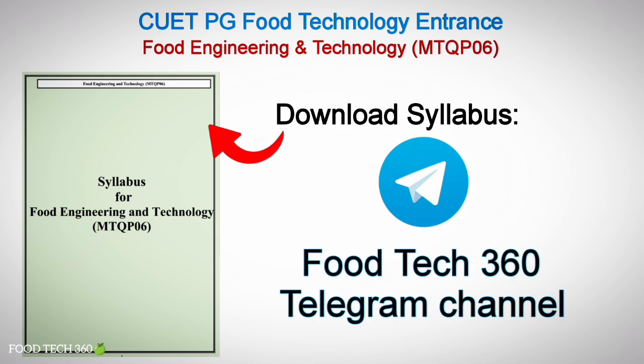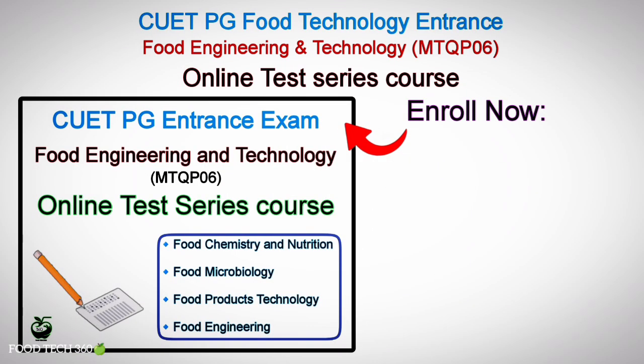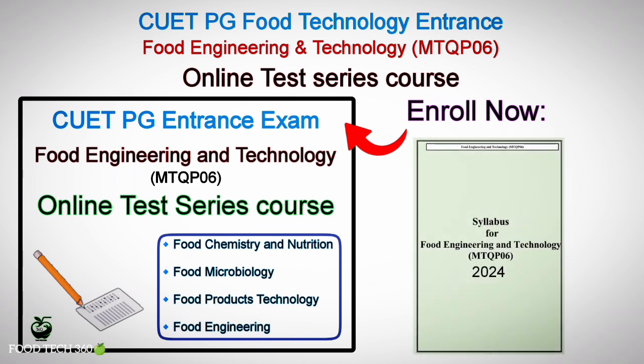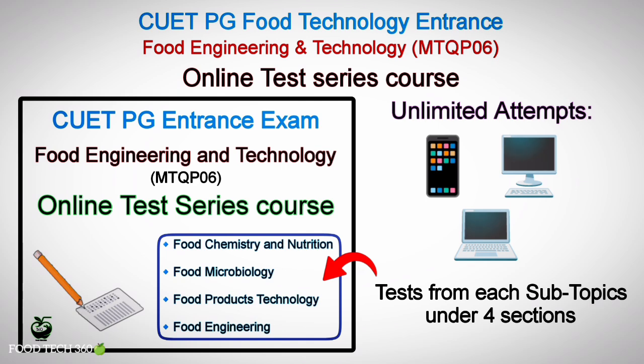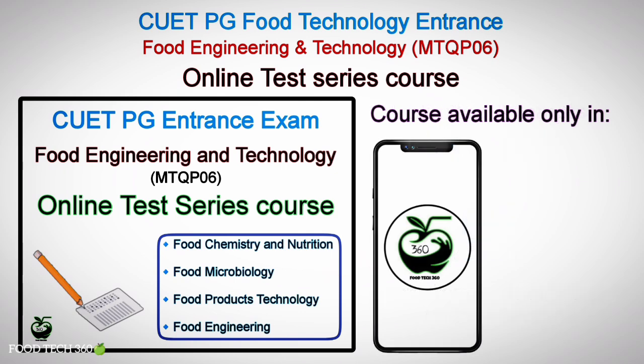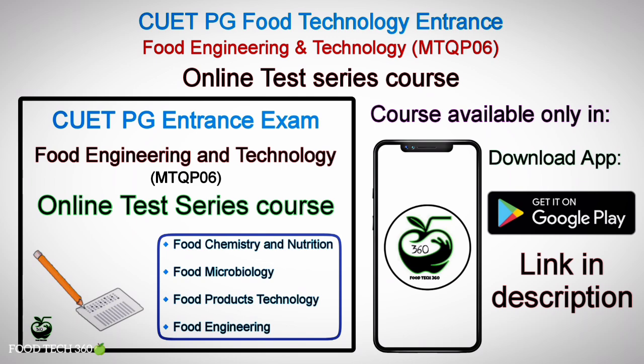If you are preparing for the Food Engineering and Technology entrance exam, you can enroll in the online test series course for COETPG Food Engineering and Technology, which is prepared exactly as per the new 2024 syllabus. You will get test series from all subtopics under each section. You can attend the tests unlimited times from your phone, desktop, or laptop. This test series course is available only on the FoodTech360 Android app, so download the app now from the Google Play Store or through the download link in the description.